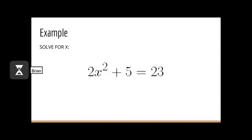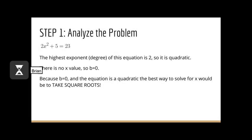For our example, let's take 2x squared plus 5 equals 23 and solve for x. The first step is to analyze the problem. Notice that the highest exponent of this equation is 2, so it is quadratic. Also, there is no x value, so b is equal to zero. Therefore, because b equals zero and the equation is a quadratic, the best way to solve for x would be to take square roots.